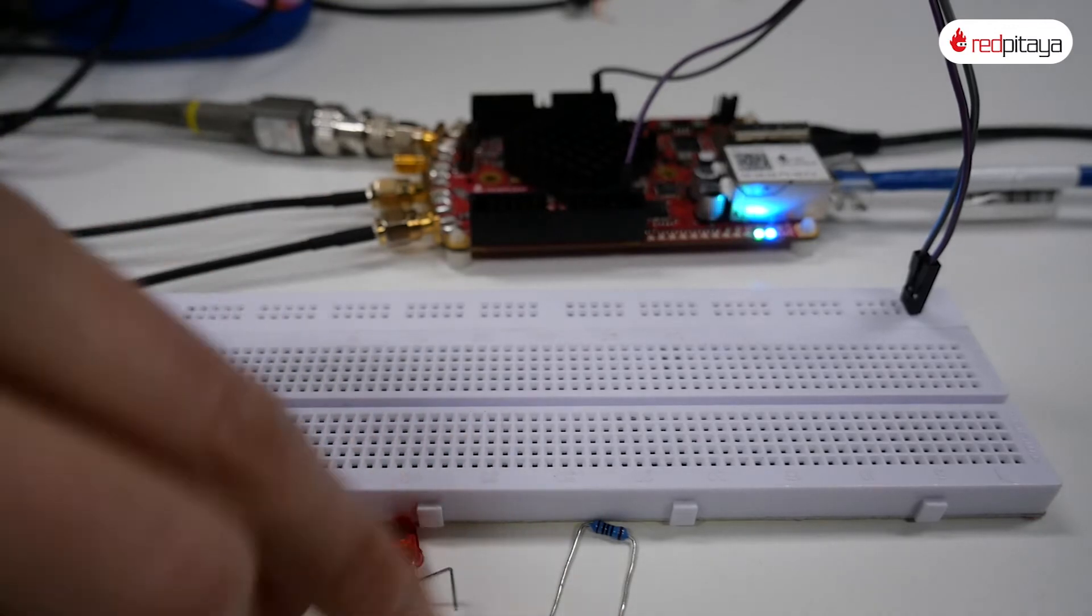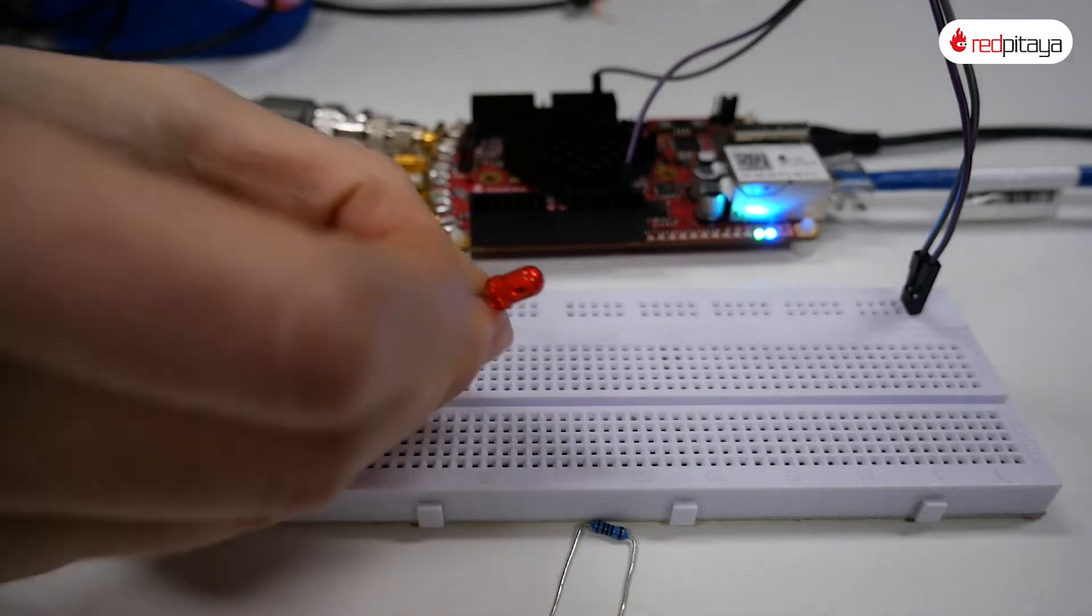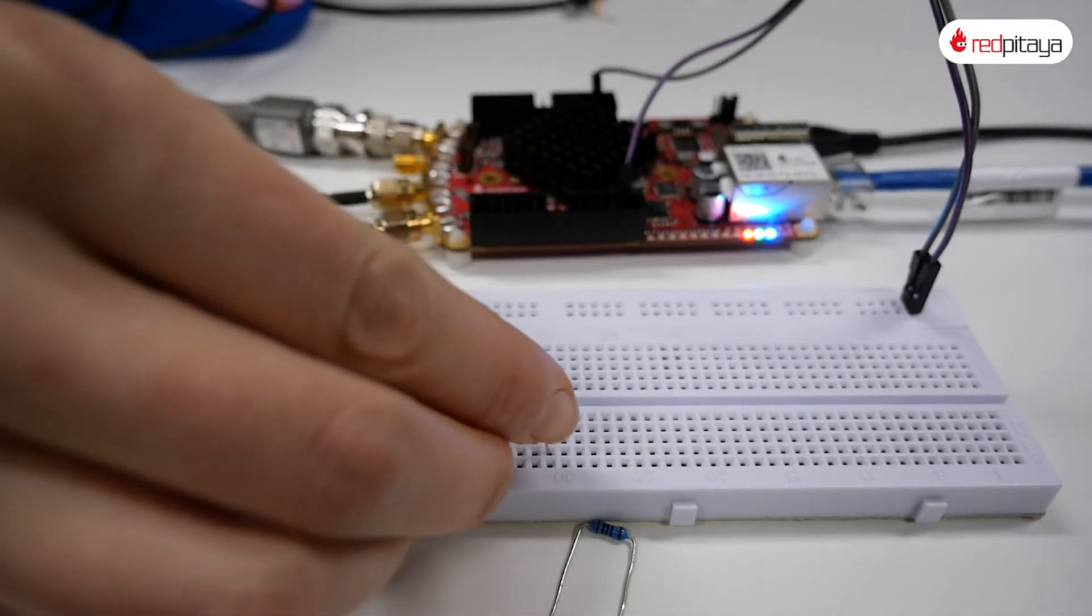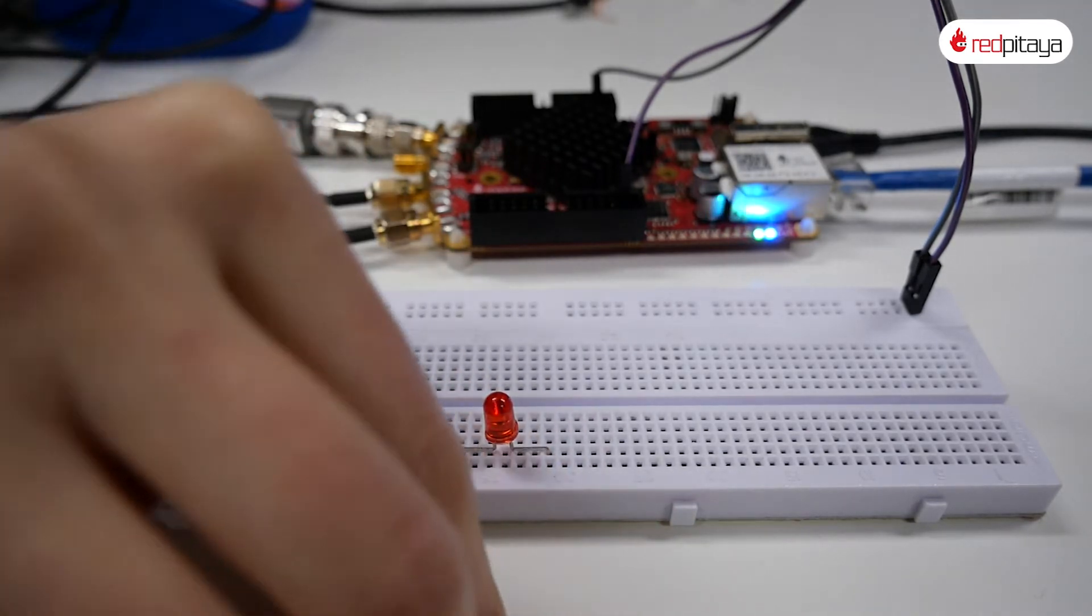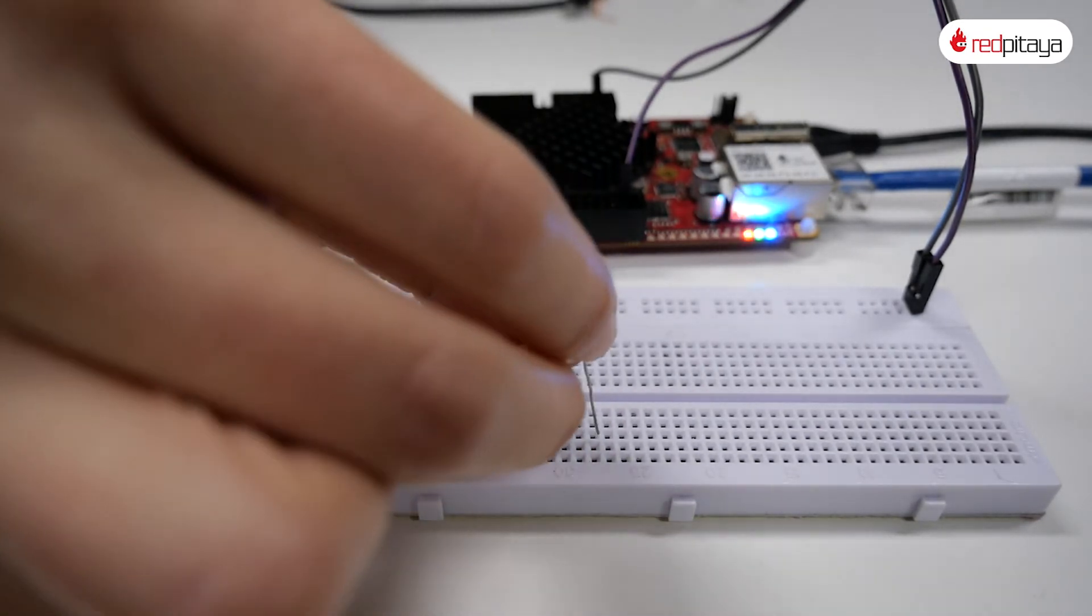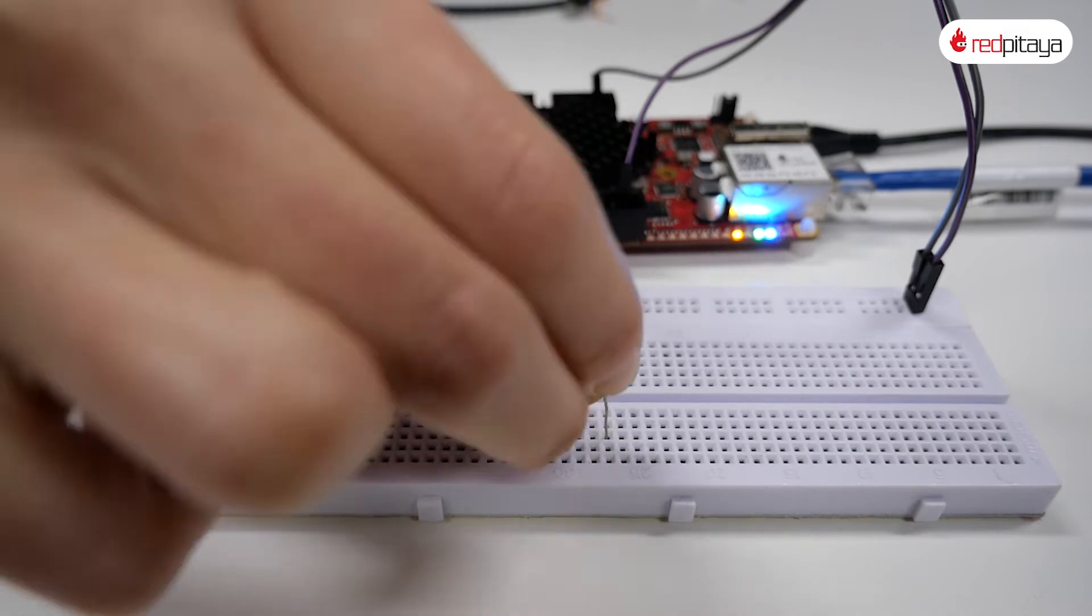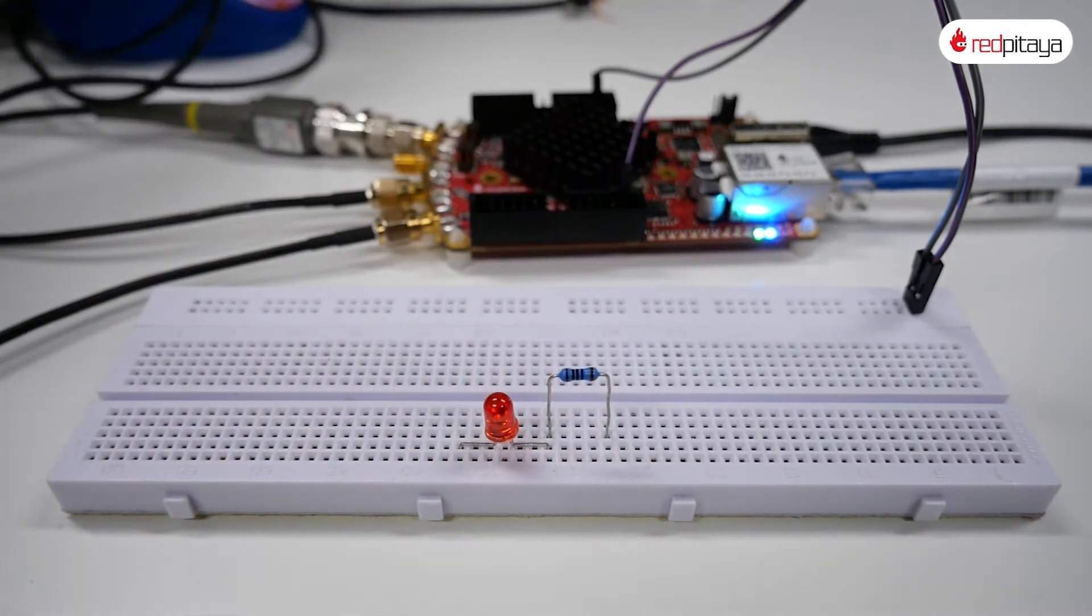The best way to illustrate this is to build a simple LED circuit and power it with Red Pitaya set to output a PWM signal. Red LED and 100 ohm resistor will be perfect.